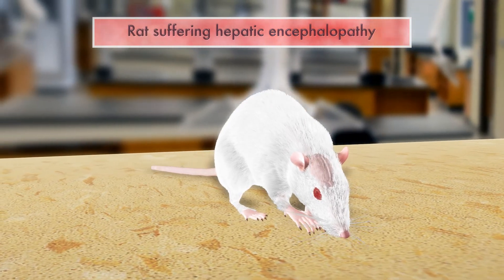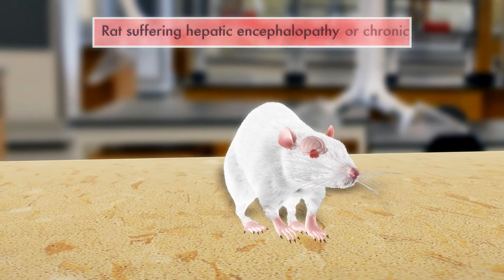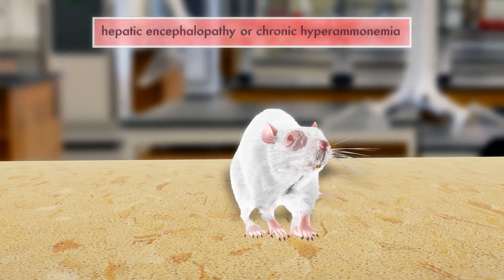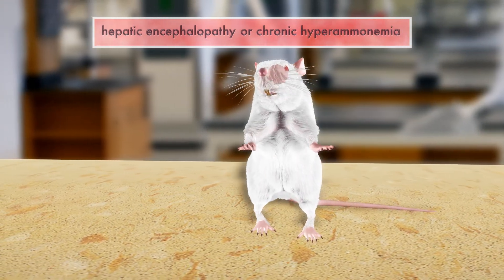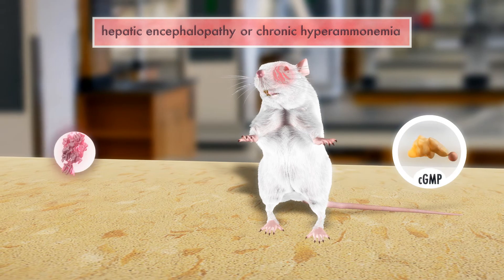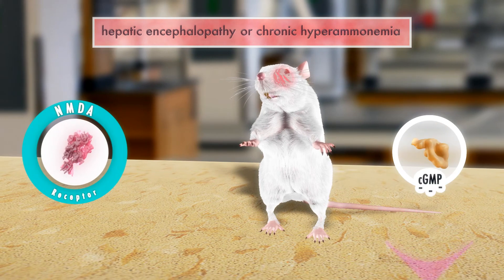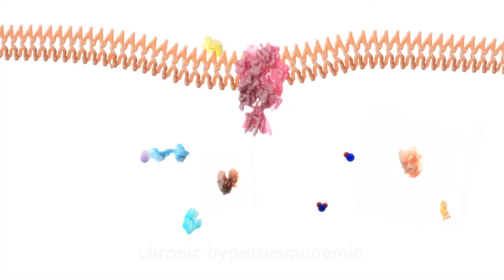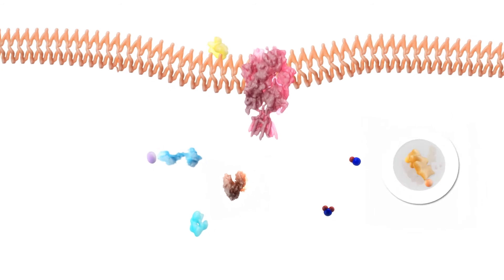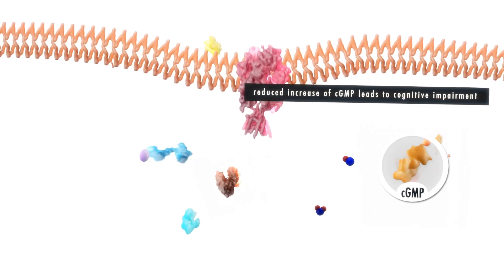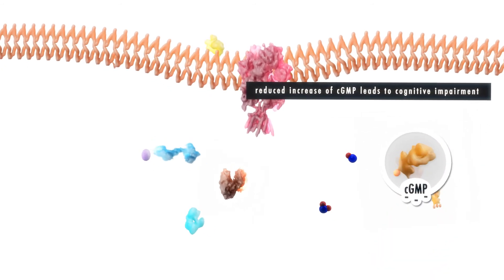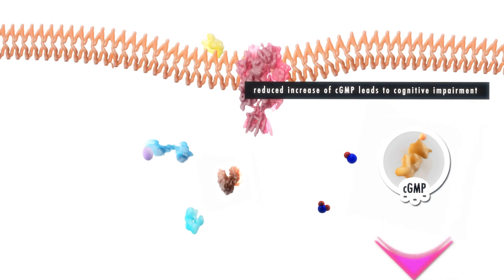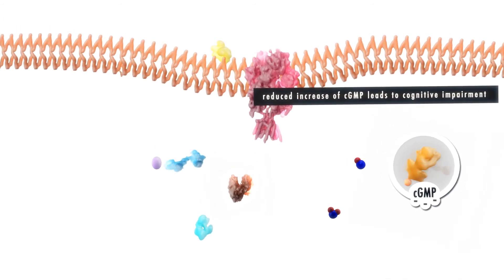However, in the cerebellums of both the rats with chronic hepatic encephalopathy and the rats with moderate chronic hyperammonemia without liver failure, the increase of cyclic GMP induced by NMDA is significantly less than in the control rats. These results point out that hyperammonemia is responsible for the decrease of the glutamate nitric oxide cyclic GMP pathway and the reduced formation of cyclic GMP in chronic hepatic encephalopathy.